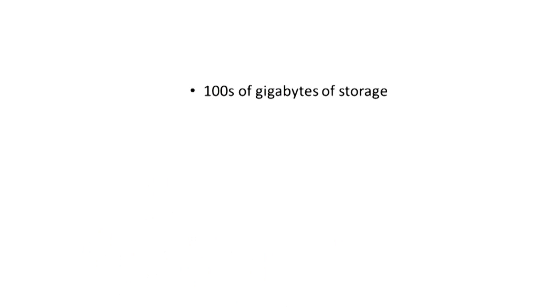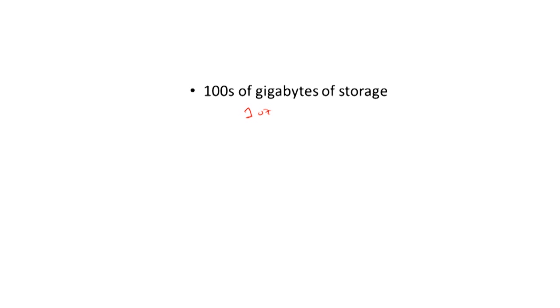We said computers do simple operations, and we also said that they have some storage. So how big is the storage inside of the computer? Well, every element of storage is called a byte. And if we were to assume that a byte weighed one ounce — I know bytes don't really weigh ounces, but just assume they weigh one ounce — a typical computer has hundreds of gigabytes of storage. And that says, if each one of those bytes weighs one ounce, a computer would be able to store the equivalent of 300 million tons. Incredible amount of storage — can remember a lot of things, and incredibly quick in terms of doing the computation.